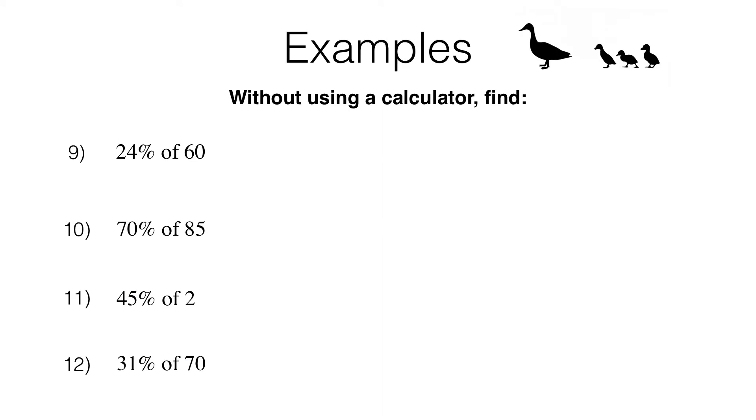Now we want to find 24% of 60. In this lesson, we're going to do this by realizing that 24% means 24 hundredths, or 24 over 100 as a fraction. And of means times. So we're going to multiply that by 60. Now we could treat this as 24 hundredths of 60, and then follow the method where we do 60 divided by 100 times by 24. Remember where you divide by the denominator and multiply by the numerator, just like we color-coded on the previous slide.